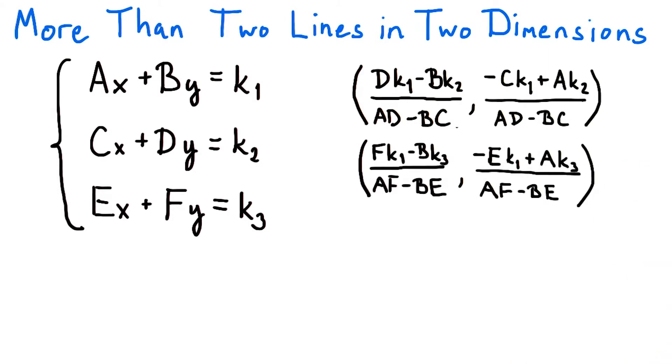Similarly, unless a, b and e, f are parallel, the first and third lines will have a single intersection point. And likewise, the second and third lines will have a single intersection, unless c, d and e, f are parallel.